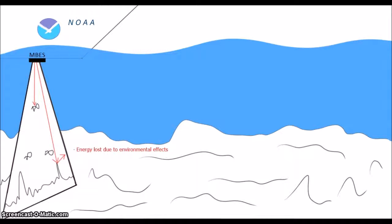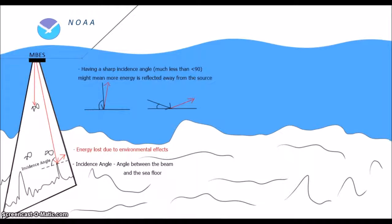Sometimes backscatter is analyzed as a function of incidence angle, or the angle between the beam and the sea floor. By looking at the relative change in backscatter across the swath, and therefore at different incidence angles, more information about the sea floor is gained beyond the directly measured backscatter.